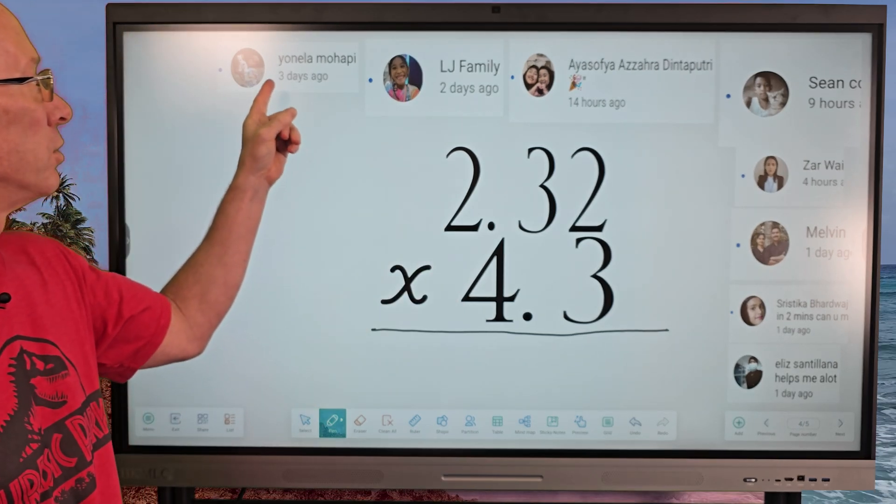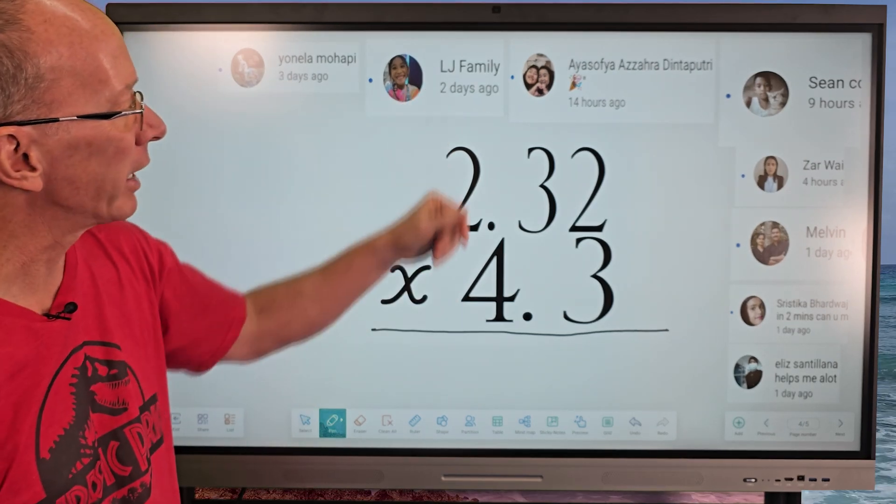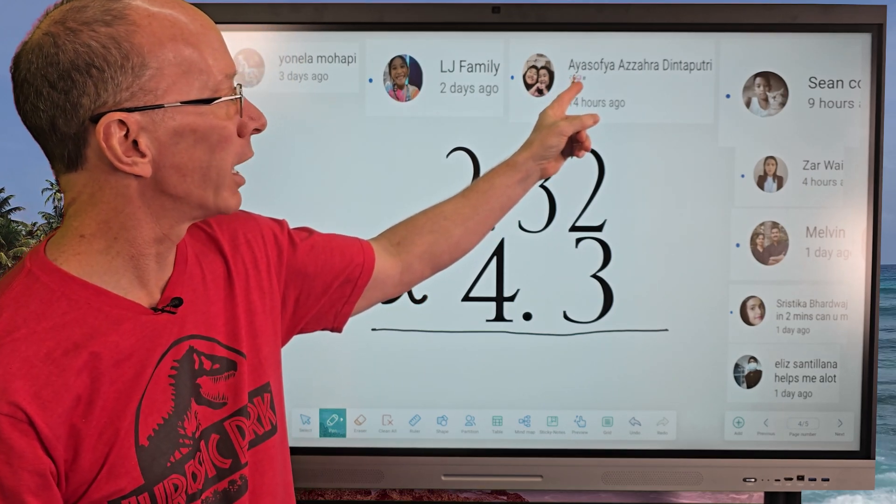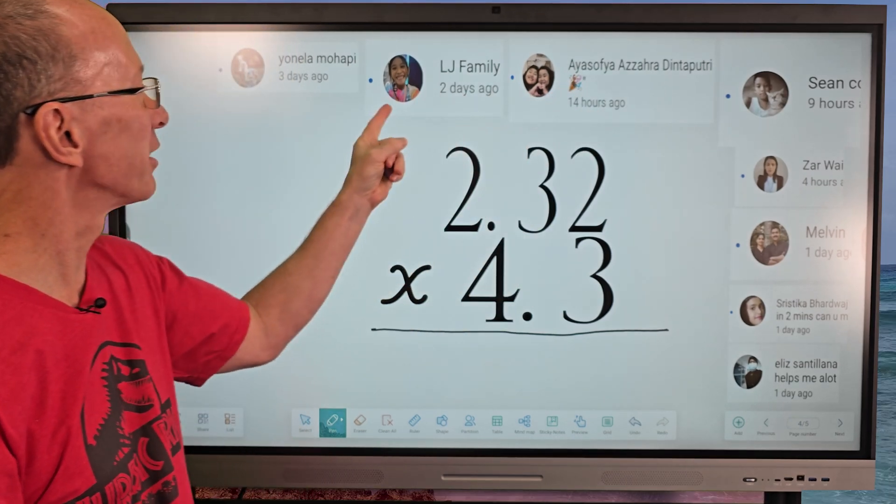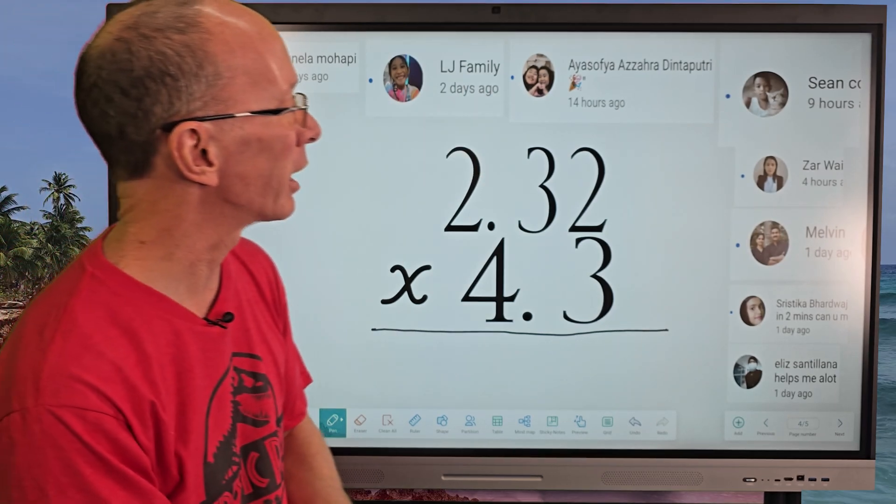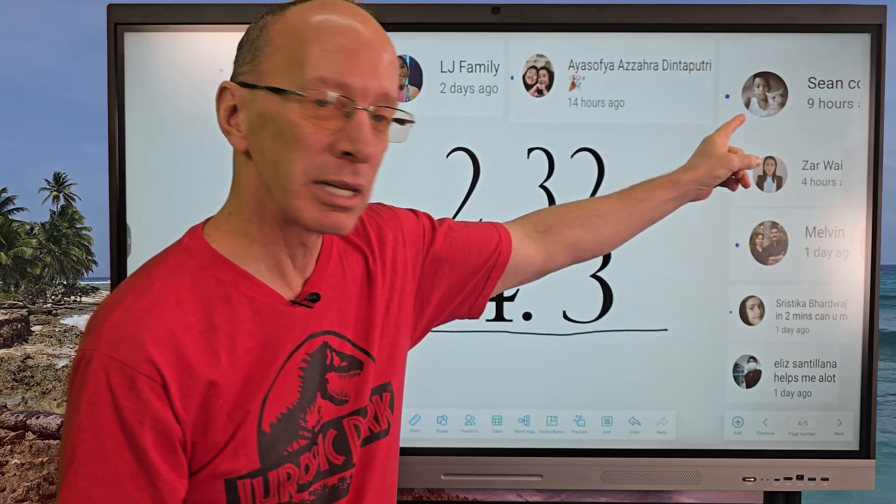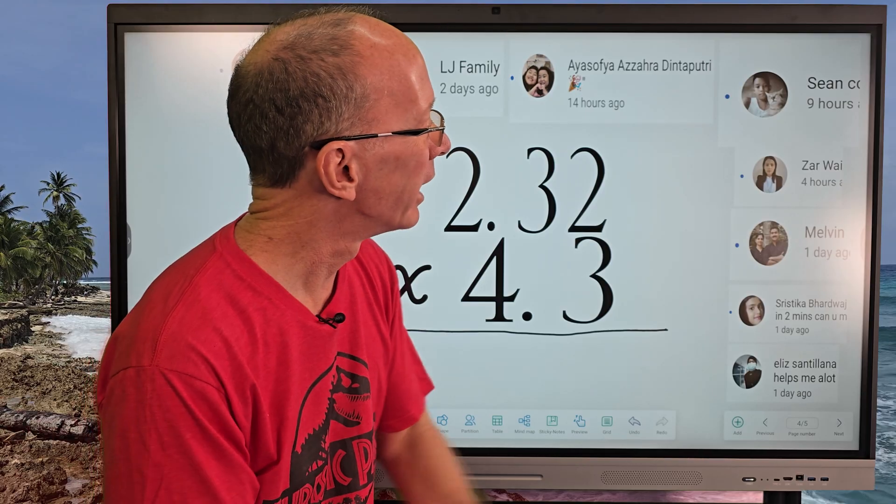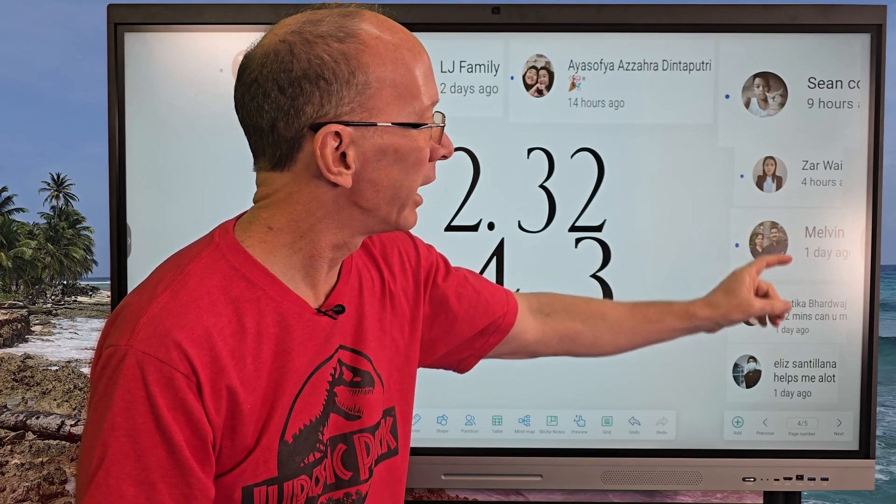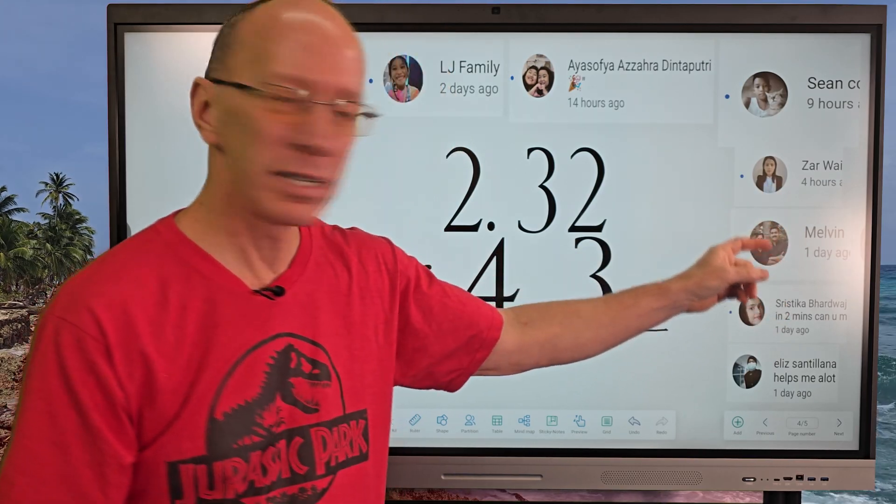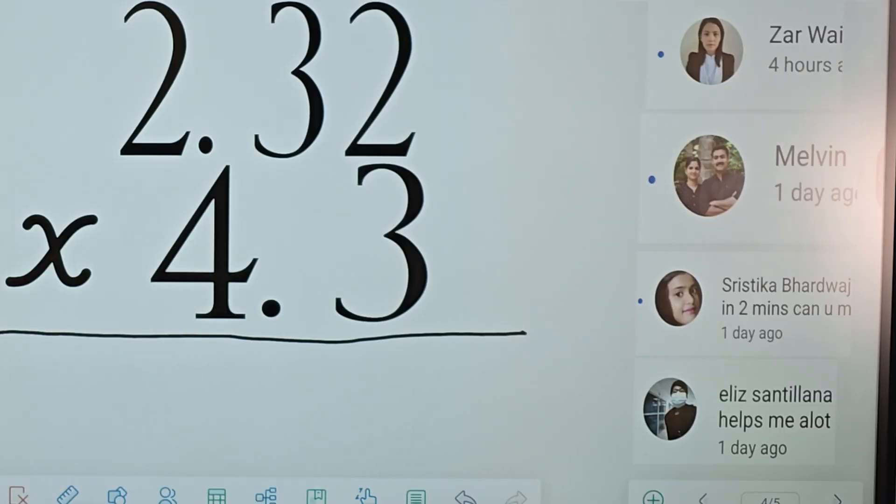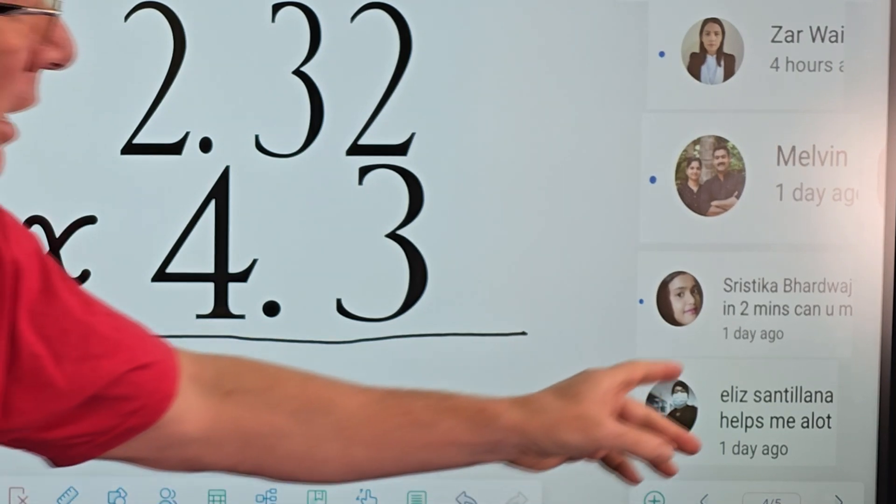I also want to send out a shout out to Yonala, LJ Family, Ayasofya - I love the pictures here, look at the smiles on our subscribers there - Sean, I like your cat, I got a cat too, so that's a beautiful cat. I think it's Zar, and also Melvin. I get quite a few comments and I hope you have a great day out there. I love it when I see your comments there.